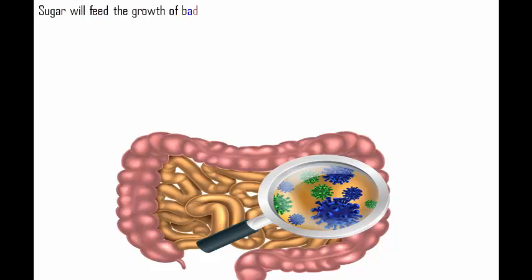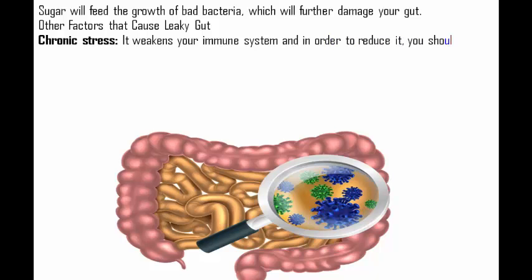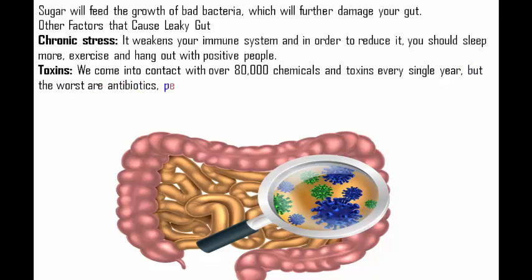Sugar feeds the growth of bad bacteria, which further damages your gut. Other factors that cause leaky gut include chronic stress, which weakens your immune system — to reduce it, you should sleep more, exercise, and spend time with positive people. We also come into contact with over 80,000 chemicals and toxins every single year.